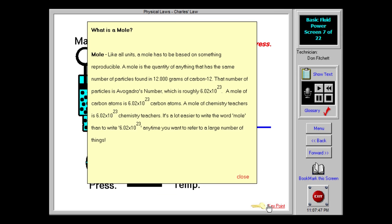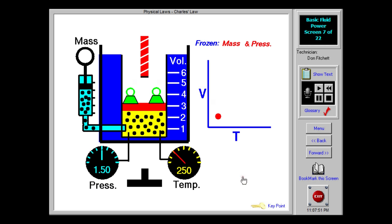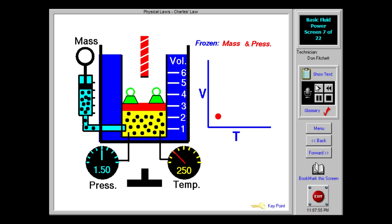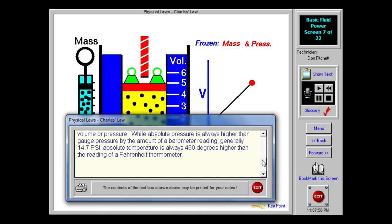Charles' law has little or no effect on air systems, because it is referenced to a zero base of negative 460 degrees Fahrenheit. A change of a few degrees, at plus 85 degrees Fahrenheit, has very little effect on the volume or pressure.